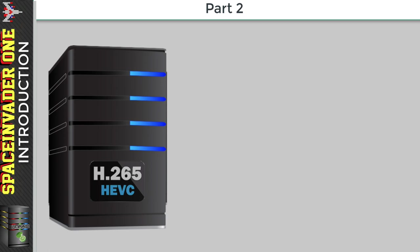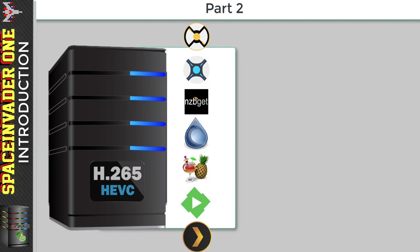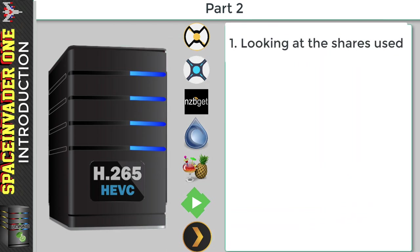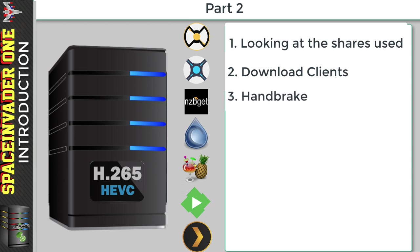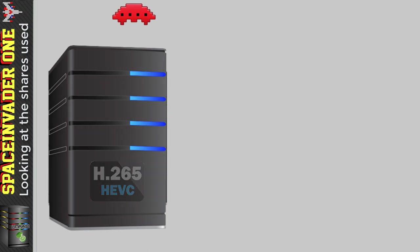In this video I'm going to show you how I set everything up on my server to get this working, and also how I set up Handbrake. Here's what we'll be looking at: firstly the shares and the various subfolders and how they're used in this process, then the download clients for both usenet and torrents and how they're configured, then Handbrake, then Sonar and Radar, and then some tweaks such as scheduling when Handbrake should run and when it shouldn't.